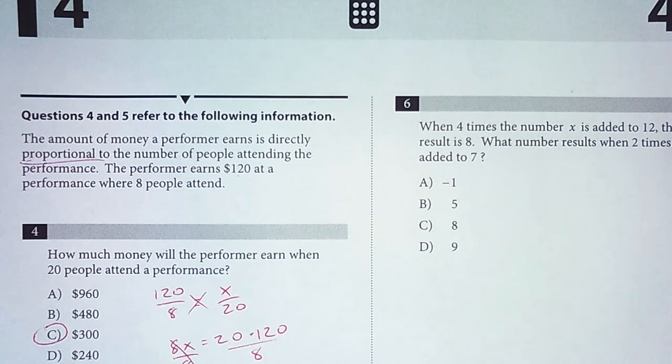The amount of money a performer earns is directly proportional to the number of people attending the performance. The performer earns $120 at a performance where 8 people attend.